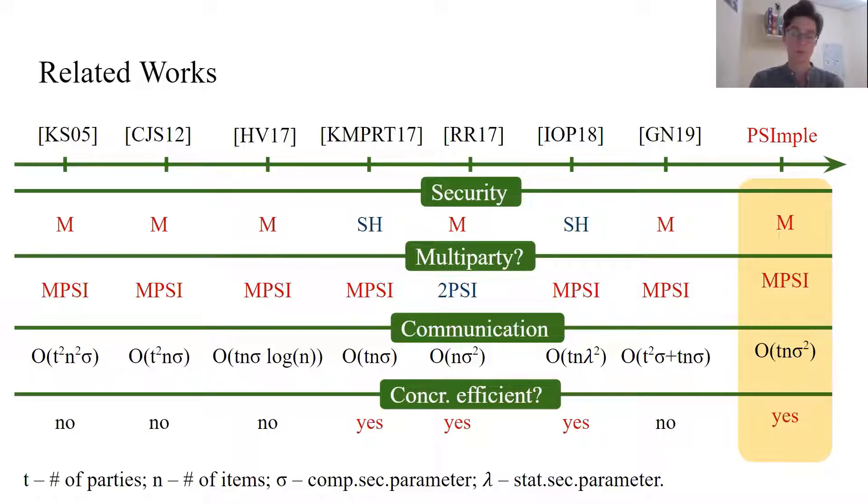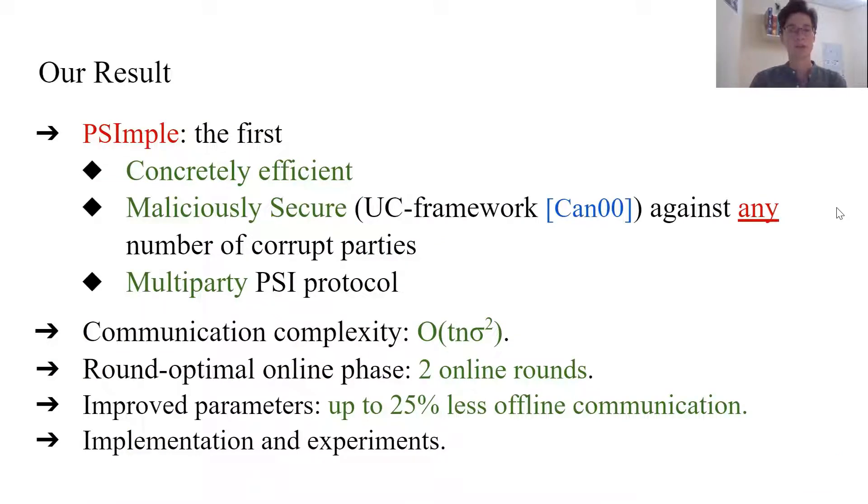In particular, there has been no concretely efficient multiparty maliciously secure PSI protocol prior to our work. PSImple is the first concretely efficient, multiparty, maliciously secure where the security is proven for online-offline mode in the universal composability framework against any number of corrupt parties PSI protocol. It has the communication complexity linear in the number of parties and in the size of the input set and quadratic in computation security parameter. It has only two rounds of communication in the online phase. We revisit the parameter analysis of previous works on efficient PSI based on similar building blocks, which results in up to 25% more efficient offline phase. We implemented our protocol and run extensive experiments with up to 32 parties and 2 to the 20 inputs. It is competitive even with the previously known semi-honest MPSI protocols.